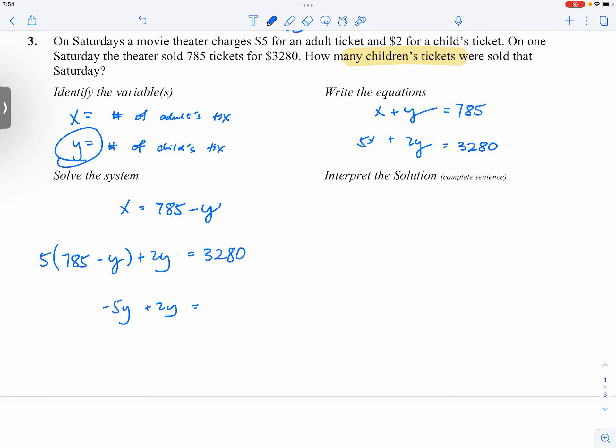And then what is 785 times 5? 3945. So you will go ahead and subtract that 3945 on both sides.